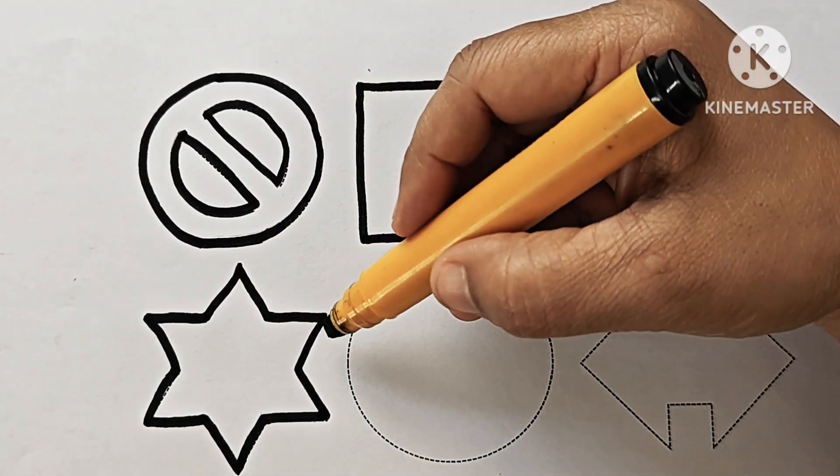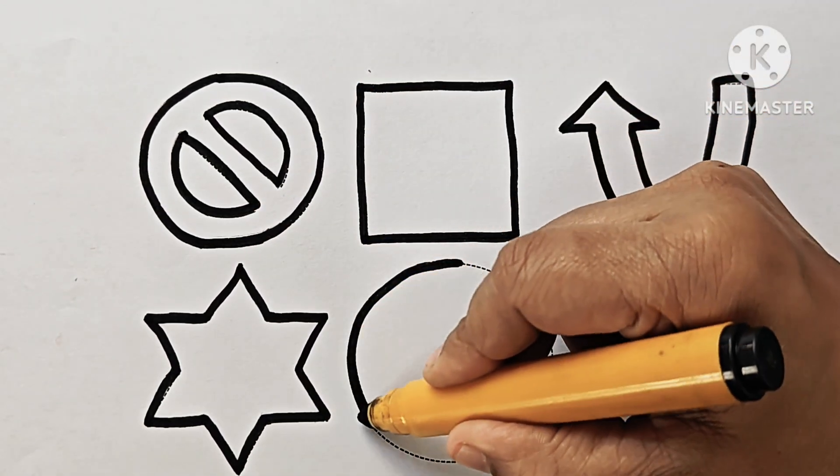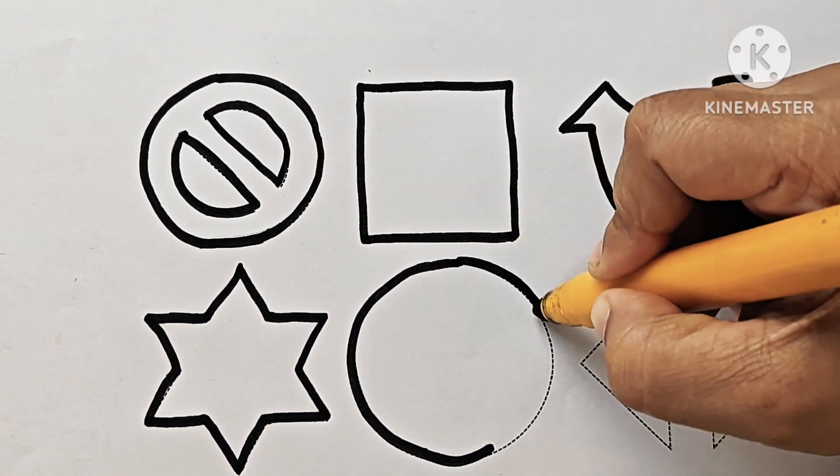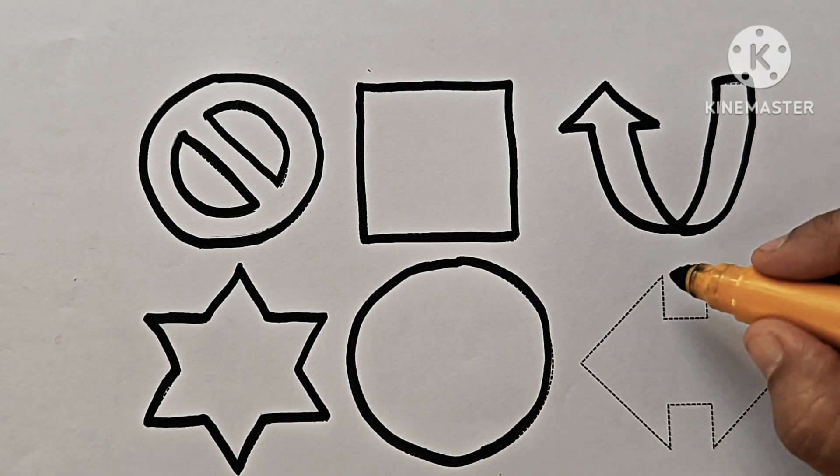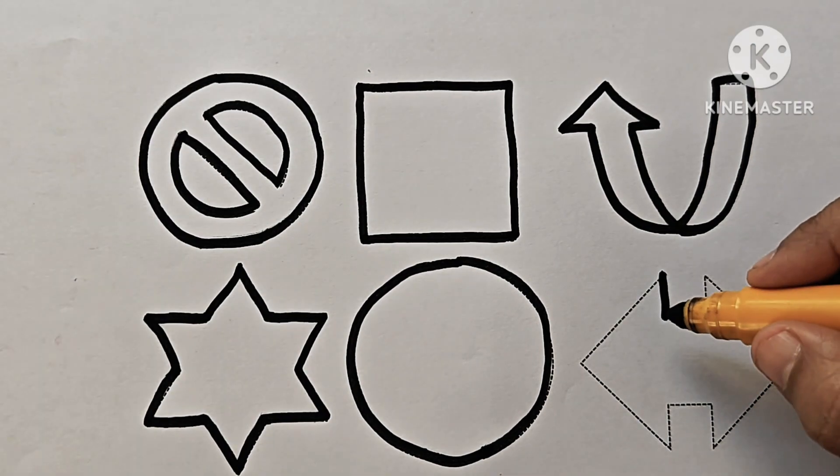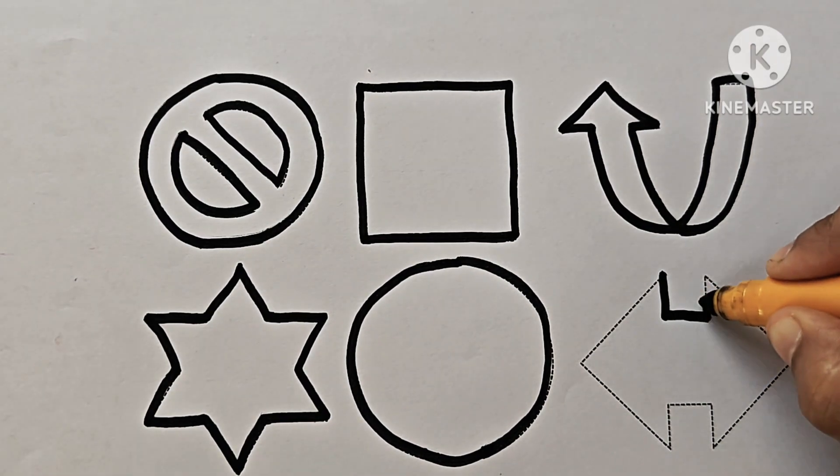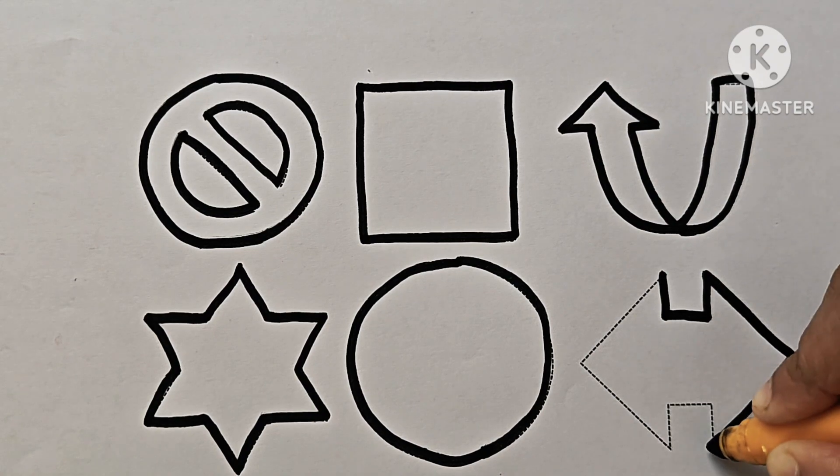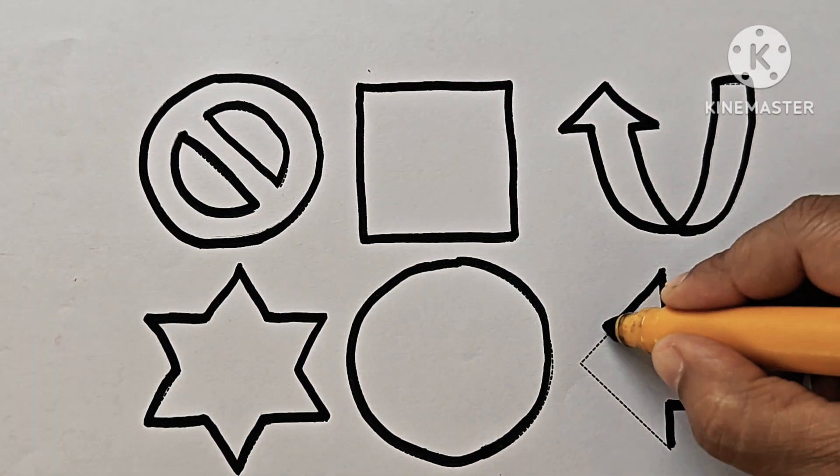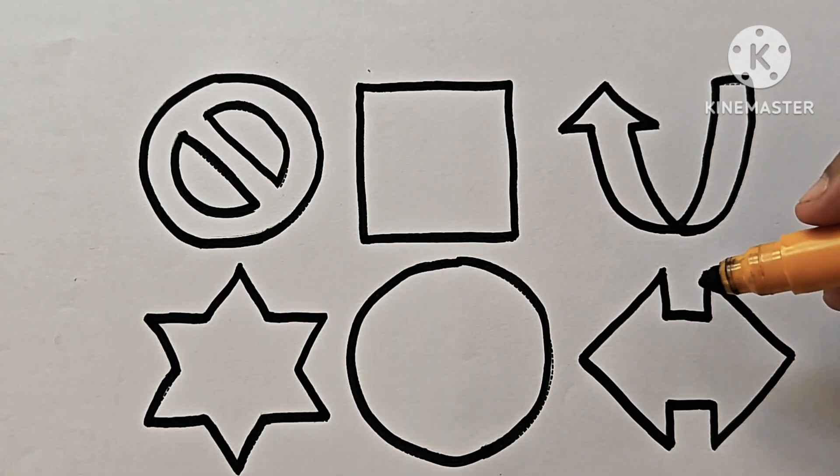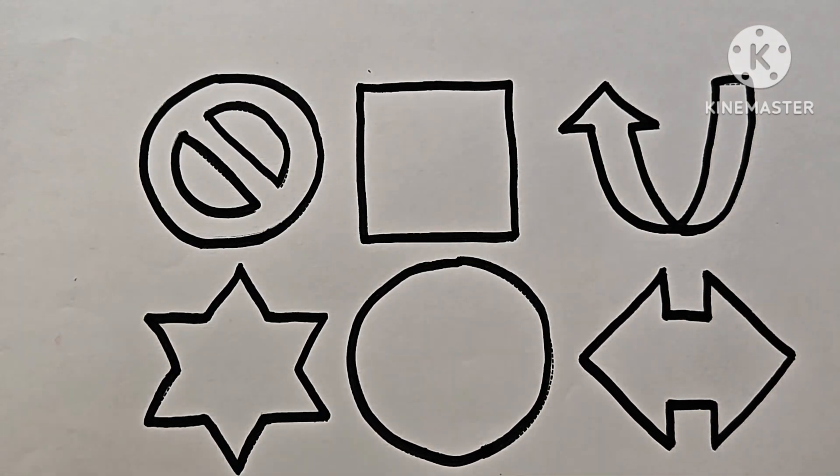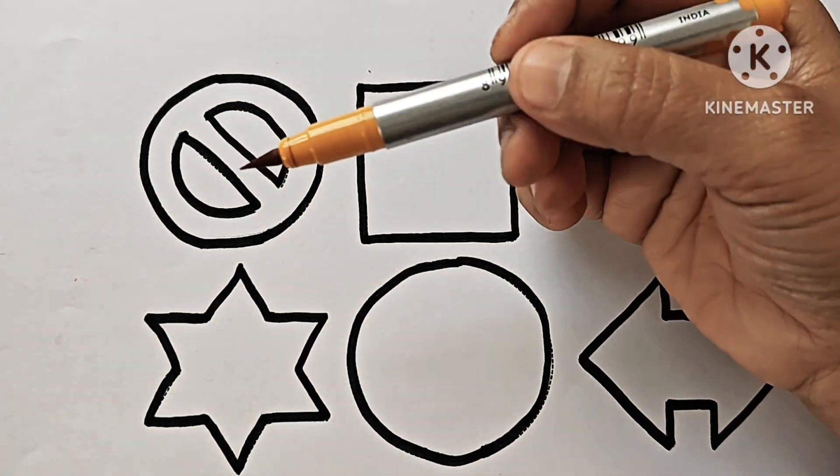This is six pointed star. Circle. It has no sides. It is left right arrow. It is a symbol. Now, let us color the shapes.